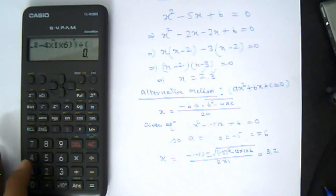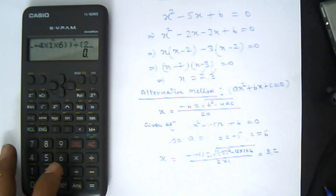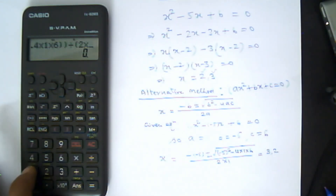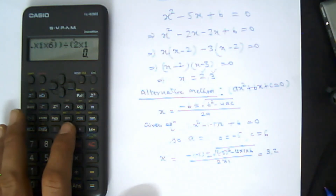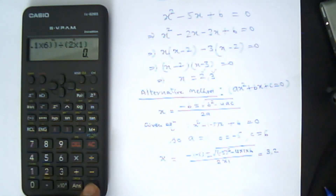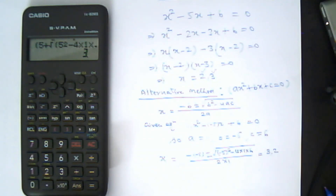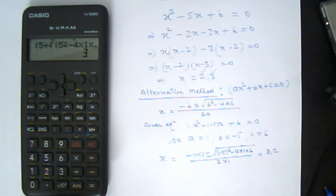Then type division, open bracket, 2 × 1, close bracket. Press equal and the first root comes out as 3. If you change the sign to minus, you get the second root as 2. This is the second method by which you can find the roots of any quadratic equation. Thanks for watching this video — hope you liked it.